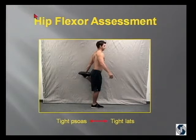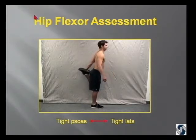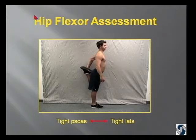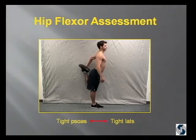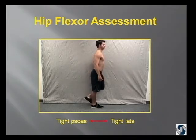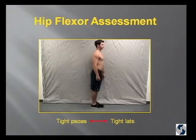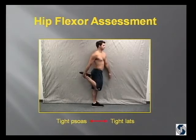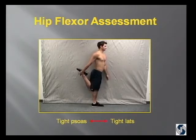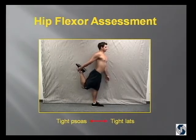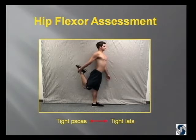If you have a tight psoas, you have tight lats. Watch how on the right especially — he does it on the left but worse on the right — as he goes to stretch his psoas, he goes into hyperextension of his low back. Think kinetic chain and how this is going to be affecting the scapulothoracic region.